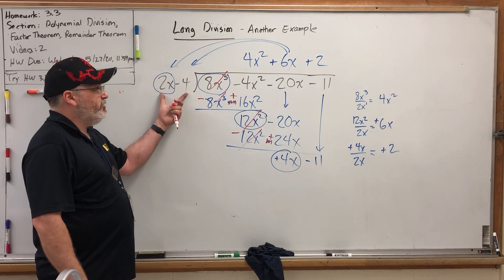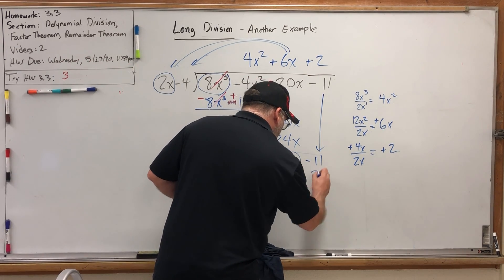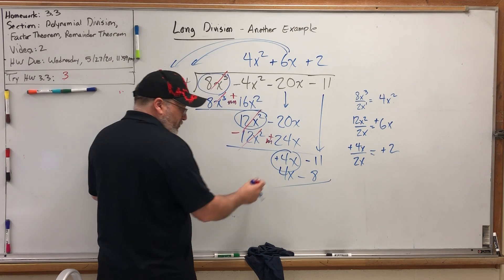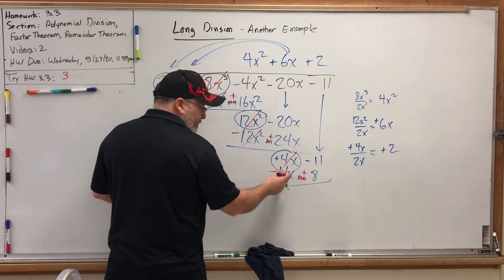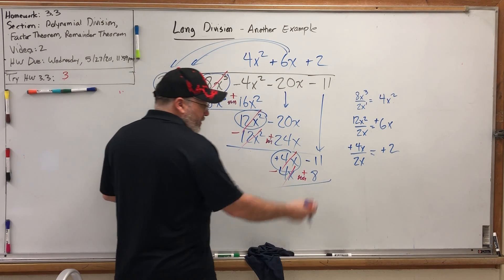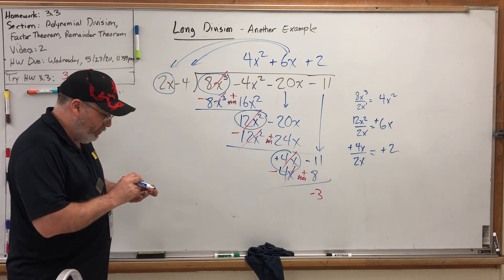Distribute over here. This is easy, just double everything. I get 4x - 8. Time to subtract. So change each term's sign and then combine. The 4x's are gone. -11 and positive 8 is -3. And now we're ready to write the remainder.